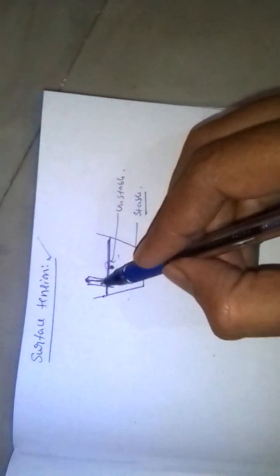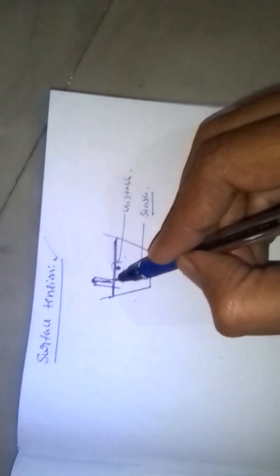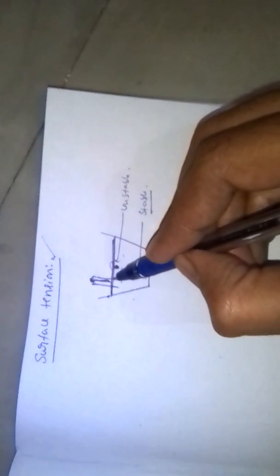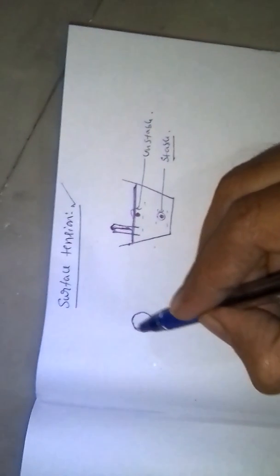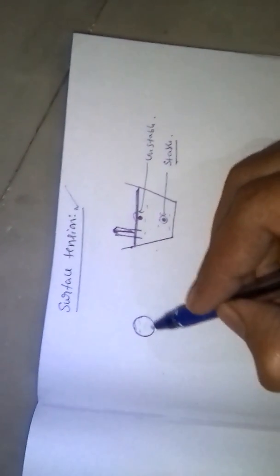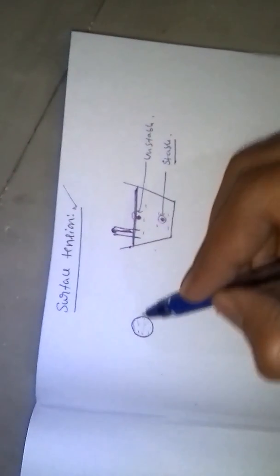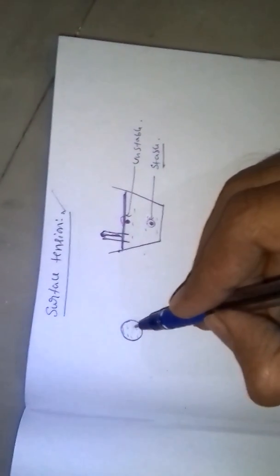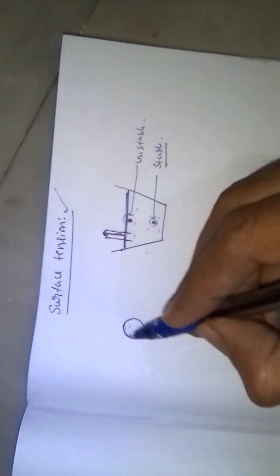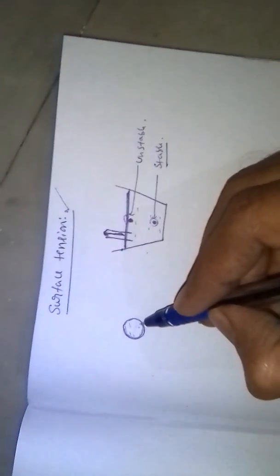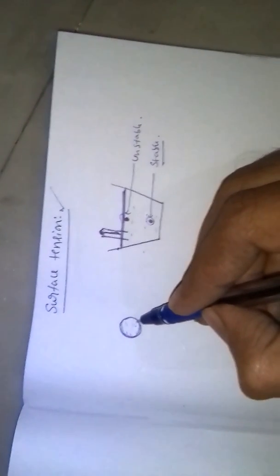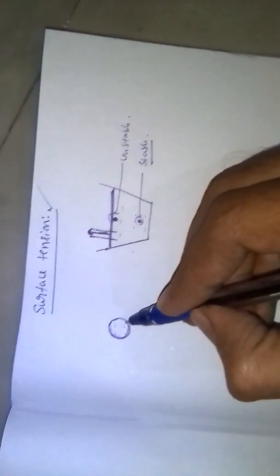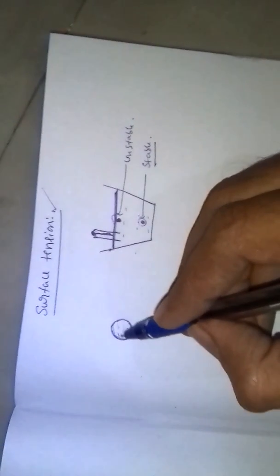Liquids rise in a capillary tube due to surface tension. Liquid drops and rain drops attain a spherical shape due to surface tension. Spherical shape means less surface area, less surface area means less energy, and less energy means stable.